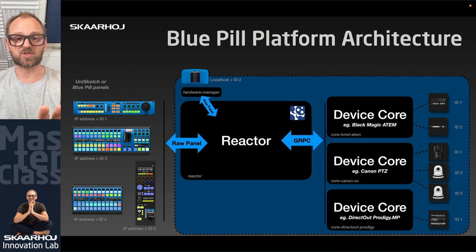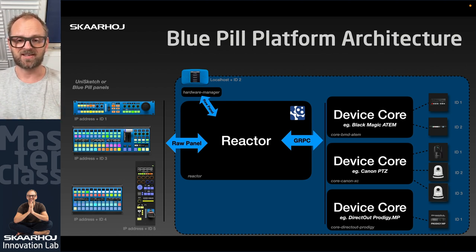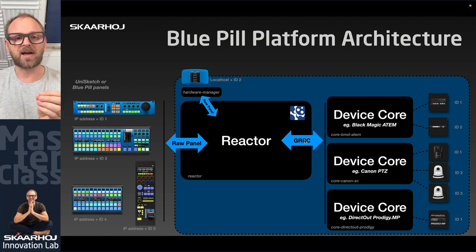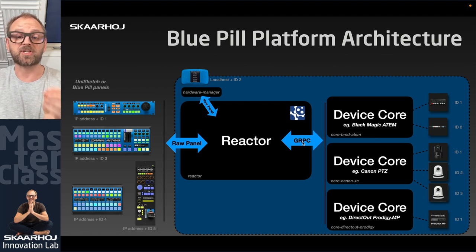Device cores and Reactor communicate through gRPC — a remote procedure call framework developed by Google. It's open source, highly efficient, with small package sizes. gRPC acts as a unified API to all devices, even though those devices have their own protocols — XC protocol for Canon, UDP for ATEM, a proprietary protocol for the Prodigy MP — the gRPC interface provides a unified protocol between device cores and Reactor.